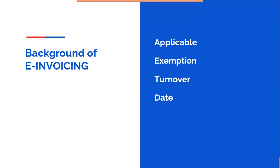Now, what is the background of e-invoicing? We will discuss four points: applicability, exemptions, turnover limits, and dates. E-invoicing started from 1st October 2020 and is applicable for B2B invoices, credit notes, debit notes, and export transactions. Exempted organizations include SEZ units, insurance and banking companies, goods transport agencies, passenger transport services, and multiplex cinemas.